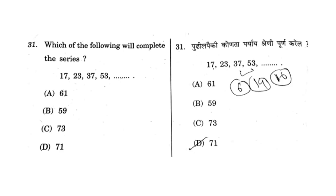Now the next question: which of the following completes the series 17, 23, 37, 53? The answer is 71. The differences are: 23 minus 17 equals 6, then the differences increase — 14, 16, 18 — each time adding 2. So after 53, add 18 to get 71.